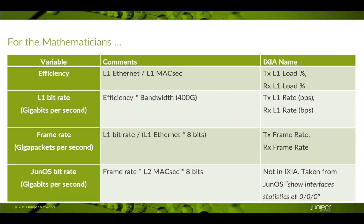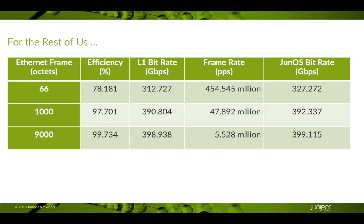For the mathematically inclined, or those who don't like magic numbers, these are the formulas that calculate those key statistics. I encourage you to come back and look at these formulas after you watch the video — they calculate the expected values. Note also the ICSEA field names of these key statistics. We will be examining TX L1 load percentage, TX L1 rate, and TX frame rate. The JunOS bit rate is taken from the show interfaces statistics command and is not part of ICSEA. I've used the previous formulas to calculate the various statistics for different frame sizes.